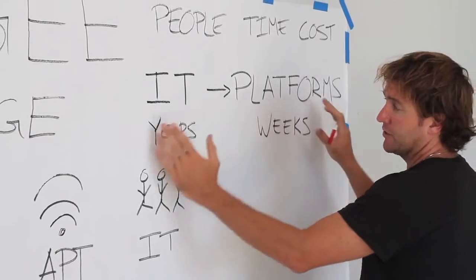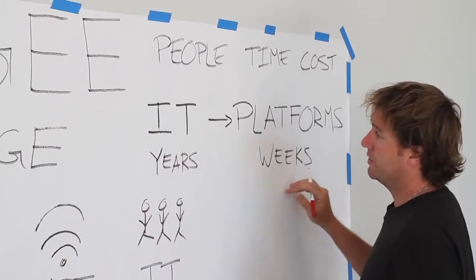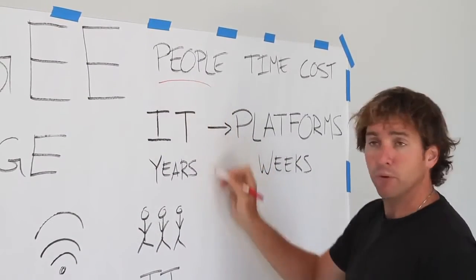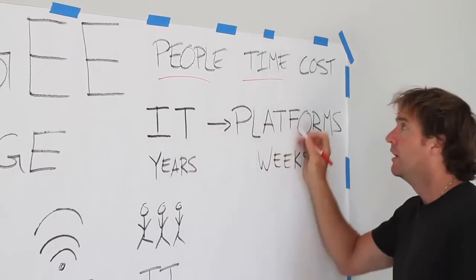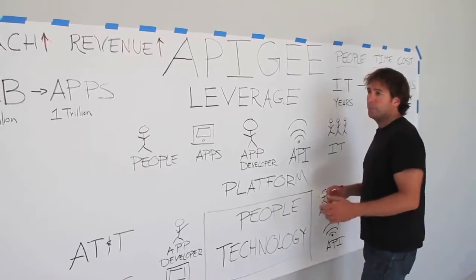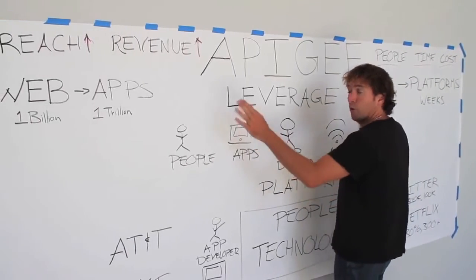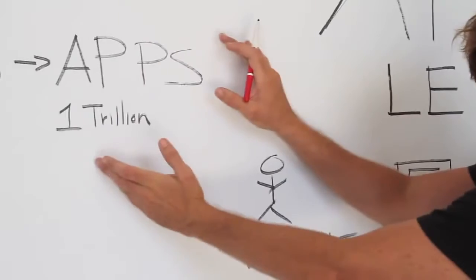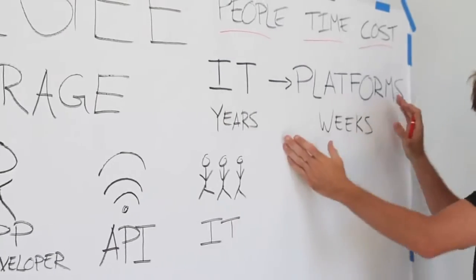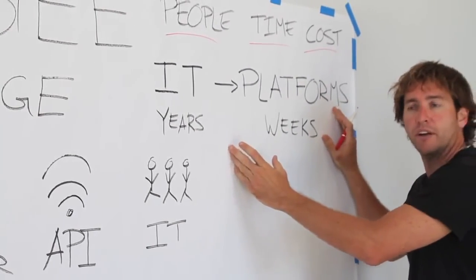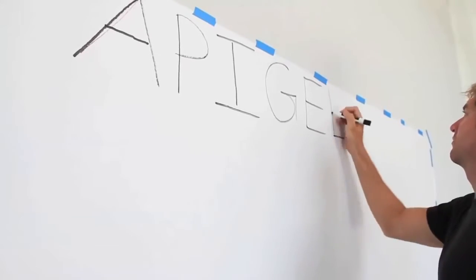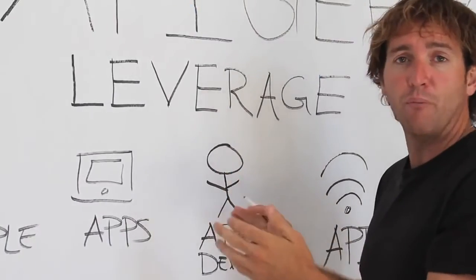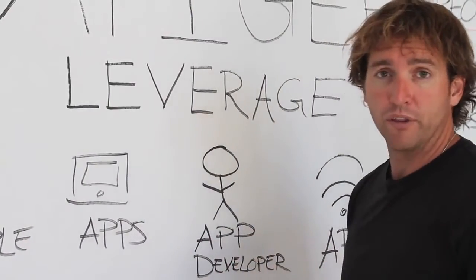Companies that take advantage of this transition are doing a much better job of managing their people, their time, and their costs. The leading companies are taking advantage of both of these transitions, where they're going on offense over here, while at the same time managing their resources more effectively over here. That's the definition of leverage, and leverage is what business is all about: being able to do more with less.